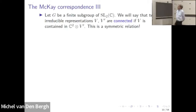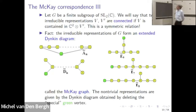If we have a group, we can consider its representations. A representation of a group is a vector space on which the group acts linearly. An irreducible representation is a minimal one — a representation that doesn't have any non-trivial sub-representations. Since G acts on C² tautologically, that's a representation of G for a finite subgroup of SL2. We can say that two irreducible representations are connected if they satisfy a certain relation, and one can check that this relation is symmetric. So we have a finite set and a symmetric relation, which gives us a graph. The graphs we get are so-called extended Dynkin diagrams.